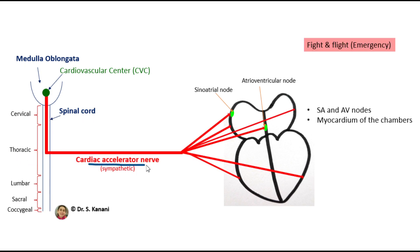When we follow cardiac accelerator nerves, we see that they have branches to supply the sinoatrial node and atrioventricular node. Also, they do have branches to supply the myocardium of all four chambers.